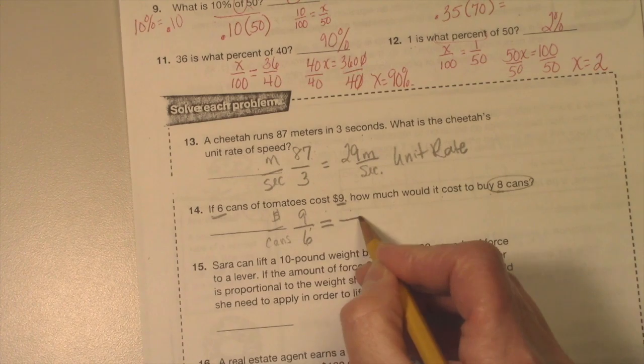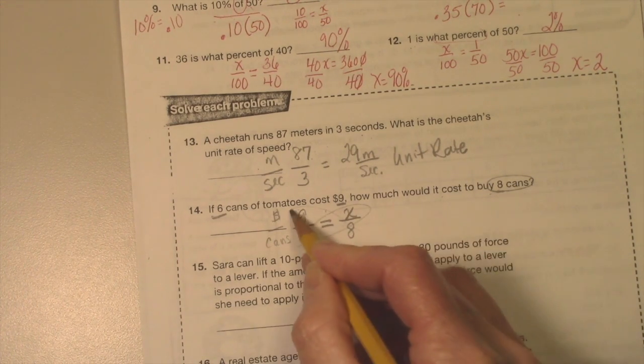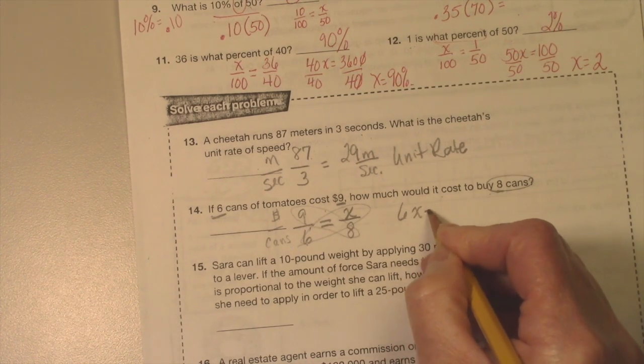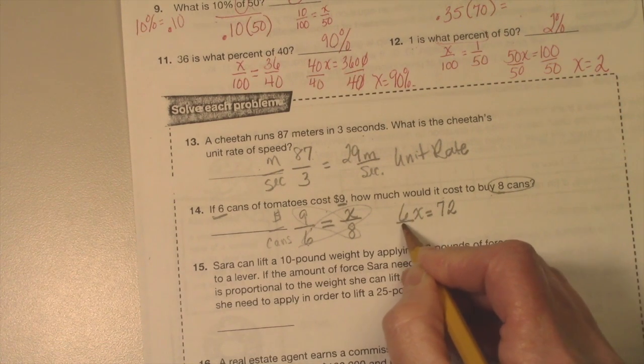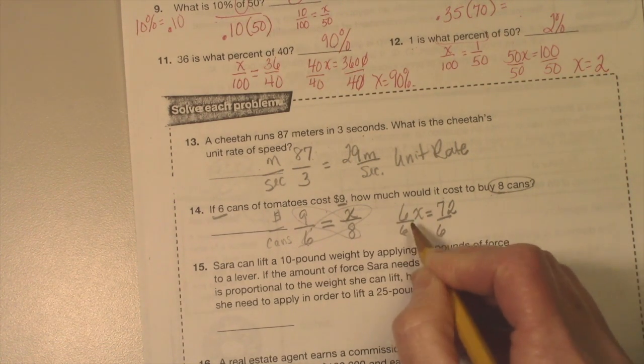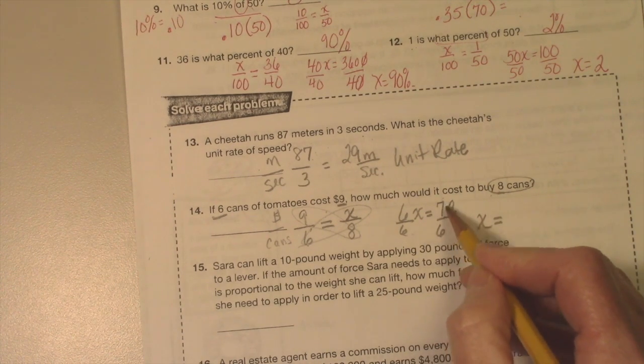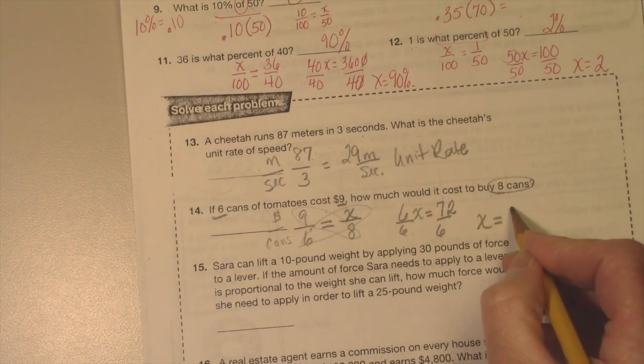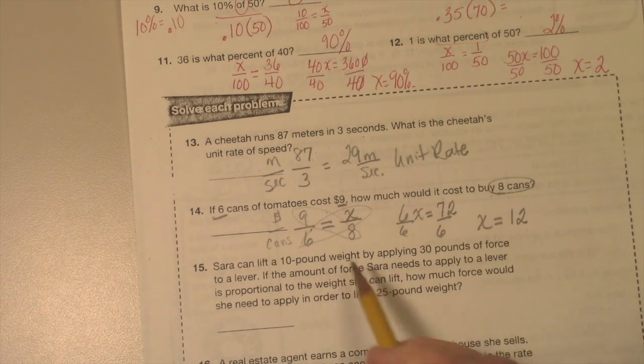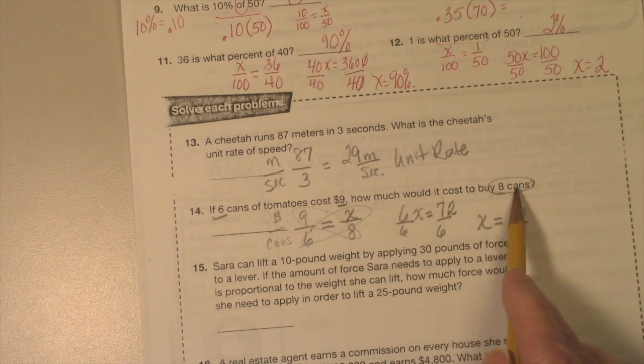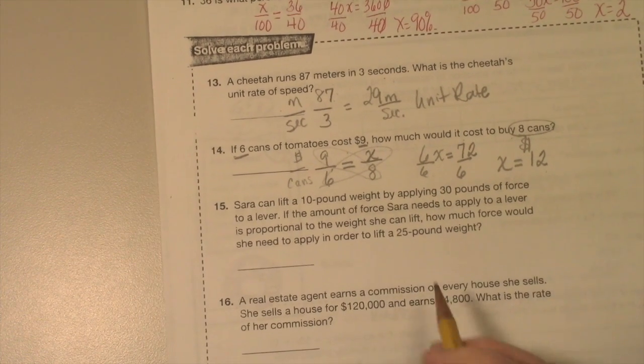X is missing, 8 on the bottom. Butterfly. So I get 6x equals 9 times 8 is 72. Divide by 6, divide by 6, and x equals—how many sixes are in 72? And the answer is 12, right? Because 6 times 12 makes 72. So what did I answer? How much would it cost to buy eight cans? $12.